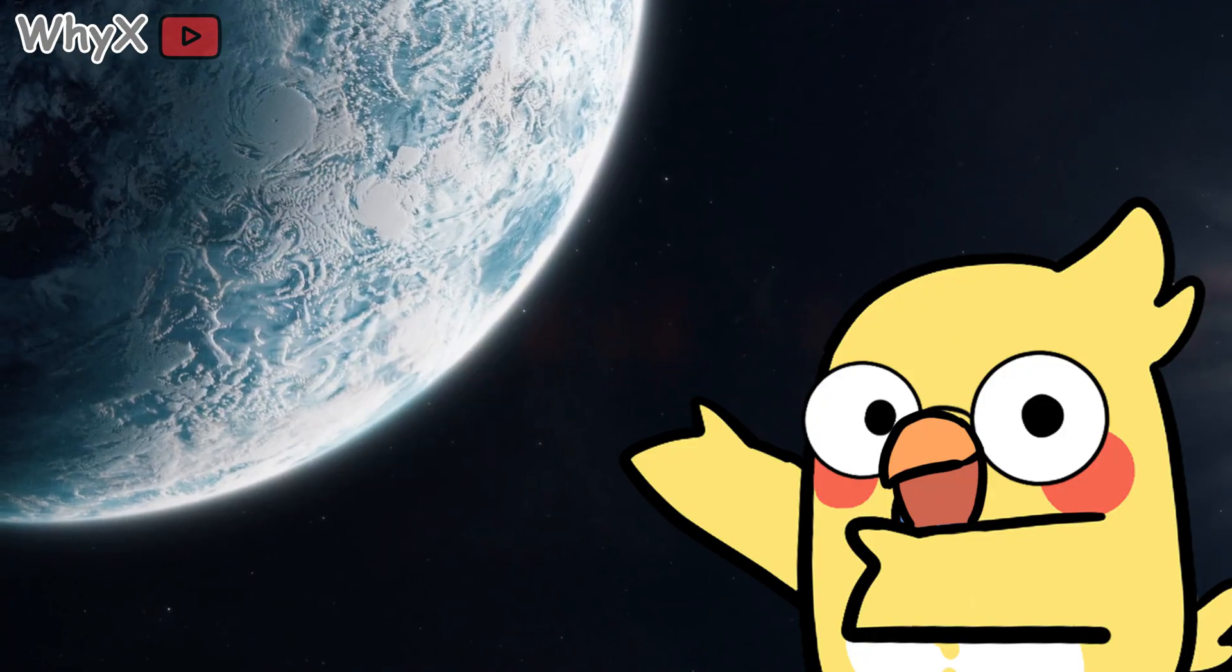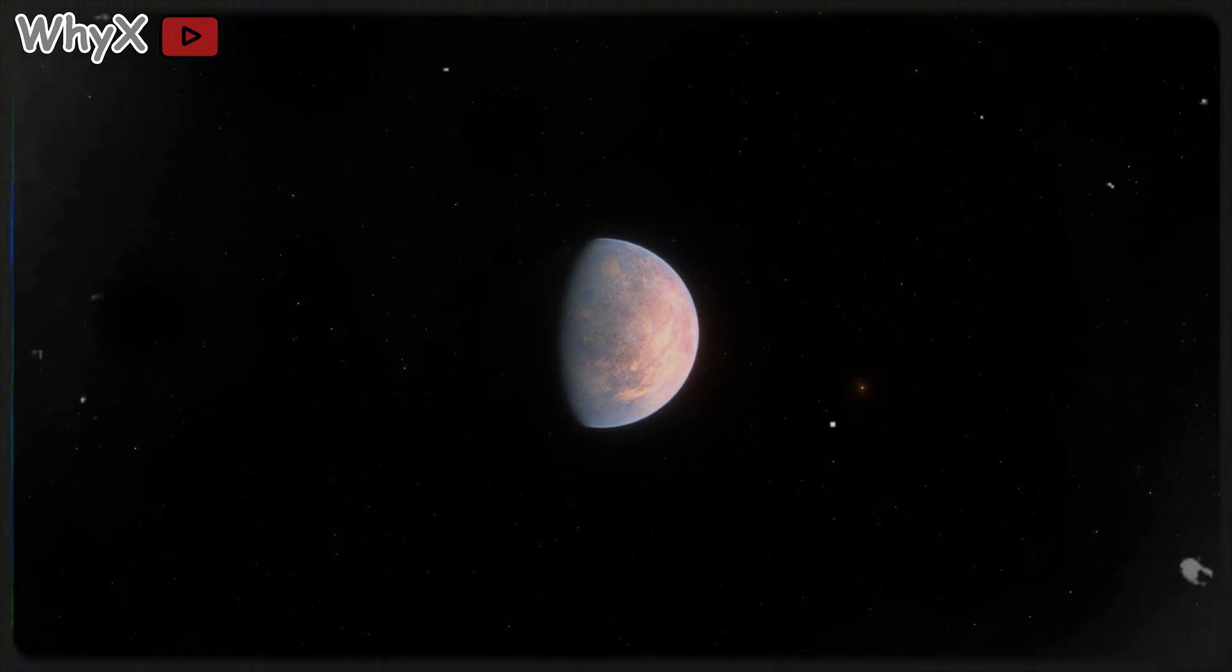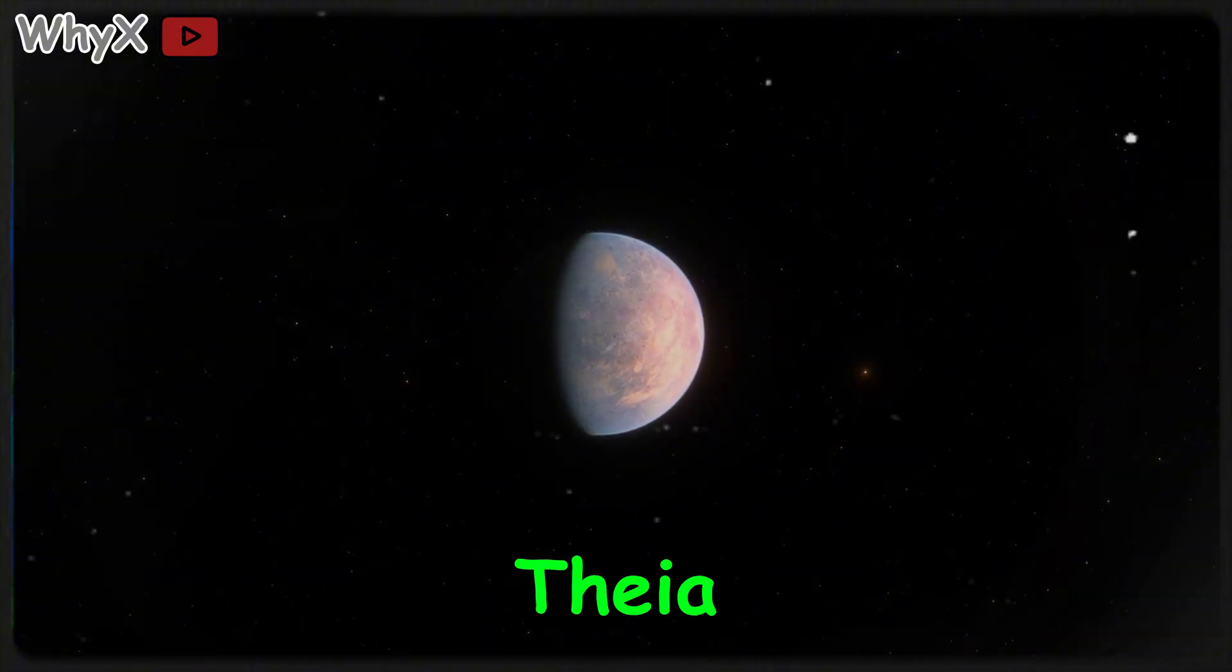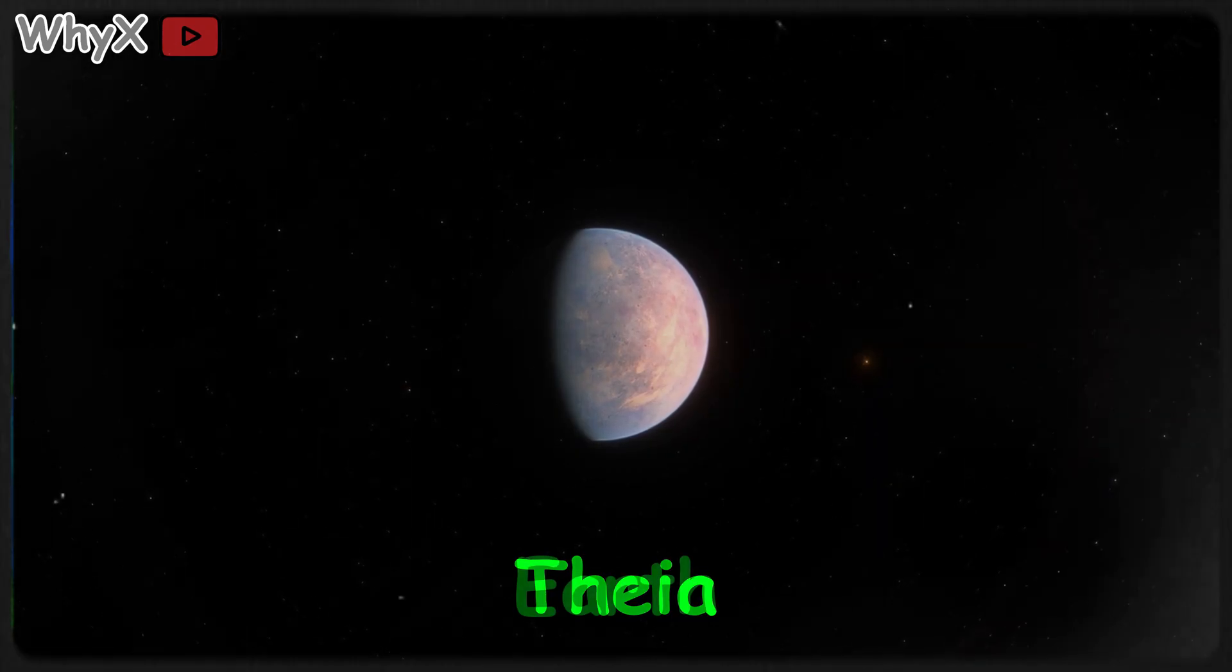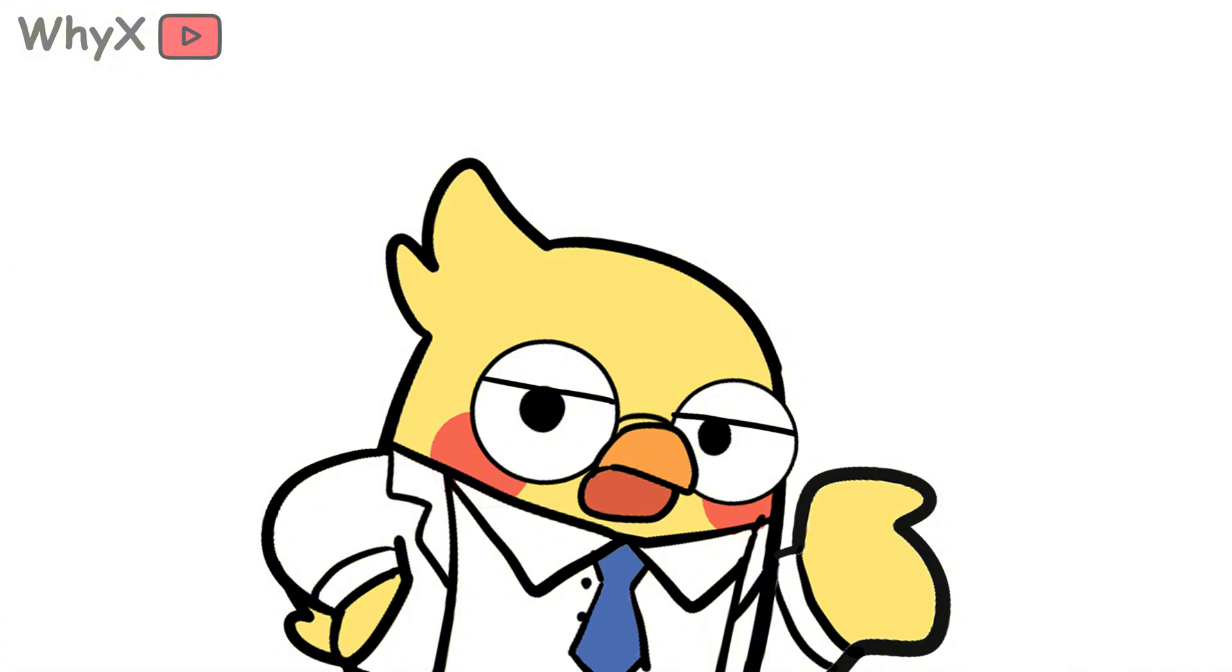In that chaos, a not-quite-planet about the size of Mars forms on a nearby lane. It doesn't get a name for a few billion years, but we'll use the one scientists eventually give it: Theia. You could think of Theia as the planet that almost became Earth, because if the story had tilted just a few degrees differently, we'd be telling tales from a very alien shoreline, or not telling tales at all.